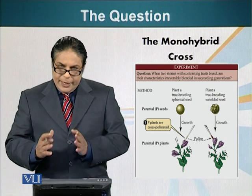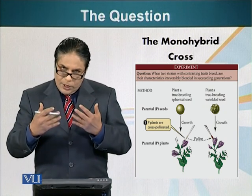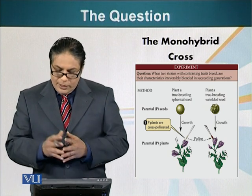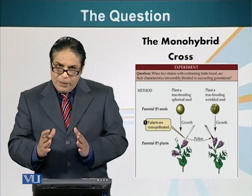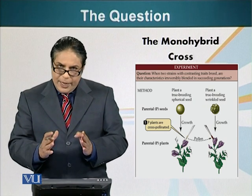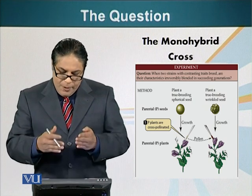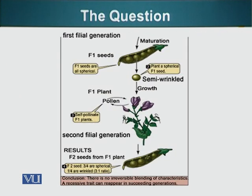He then cross-pollinated a plant that was going to produce spherical seeds with a plant that was going to produce wrinkled seeds. These plants were the parental plants, which were true breeding, and are denoted as P, abbreviated P. In the first generation — the F1 generation — all seeds produced were spherical.